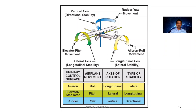When the rudder is moved to the right-hand side, the aircraft also moves to the right-hand side. So the directional change is possible with the rudder surface — that is, we get a yawing moment with the rudder.